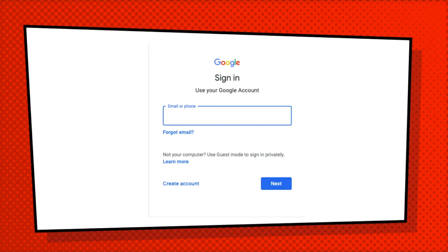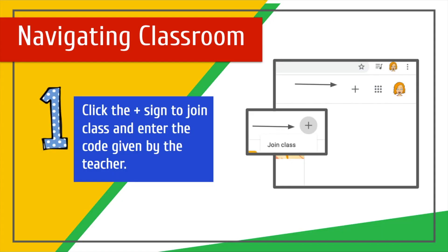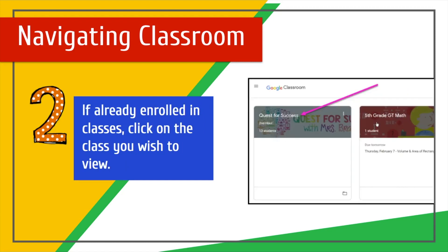Next, the student will enter their district email address to get into their Google account. Once into Google Classroom, the student will click the plus sign and join the class by entering the code given to them by their teacher. If a student is already enrolled in that class, they simply click on the class that they wish to enter.